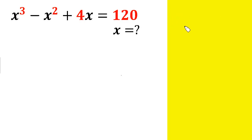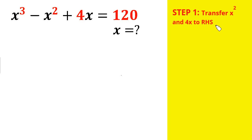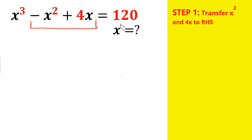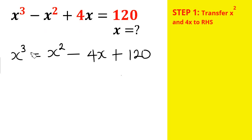Step 1: Transfer x² and 4x to the right hand side. We move minus x² plus 4x to the other side, so the expression becomes x³ = x² - 4x + 120.